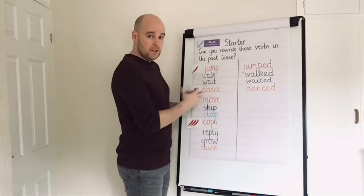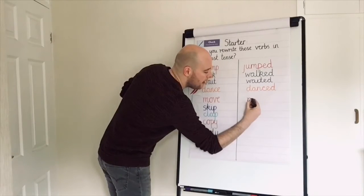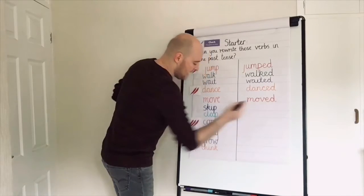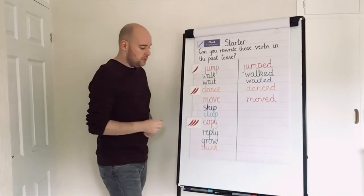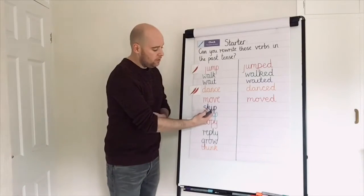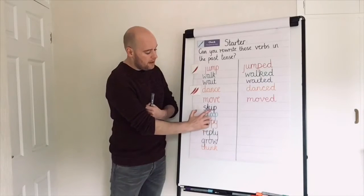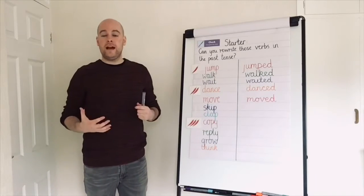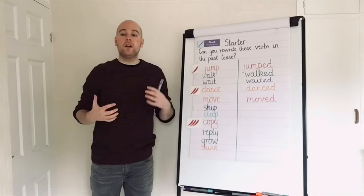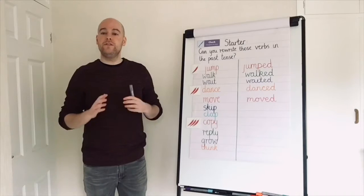We don't need to add an extra E if there's one already there at the end. So for 'moved' — MOV — I've already got the E at the end, so all I need to do is add the D. Now for 'skip' and 'clap', hopefully some of you remembered about doubling the final consonant. You have to have a look at what we call the penultimate letter — the one before the last letter. In 'skip' and 'clap', I and A are short vowels. If they're short vowels, we can't add the ED on straight away, because if I added an E to 'skip', I'd accidentally create a split digraph and make that into a longer vowel — 'Skyped' or 'Claped' — and I don't want that, so I've got to double the final consonant before I add ED.